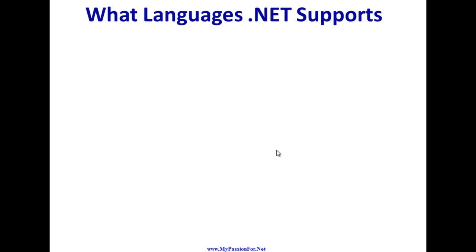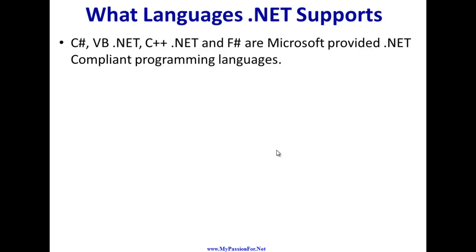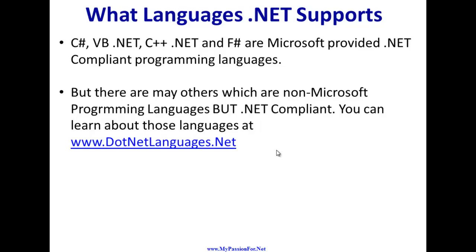What languages does .NET support? Normally people understand that only C# or VB.NET support .NET Framework, whereas Visual Studio by default provides four programming languages: C#, VB.NET, C++.NET, and F#. These are four Microsoft-provided .NET-compliant languages — meaning languages that can target, compile, and execute on .NET Framework. But there are also many non-Microsoft programming languages that Microsoft supported to be converted into .NET-compliant languages.